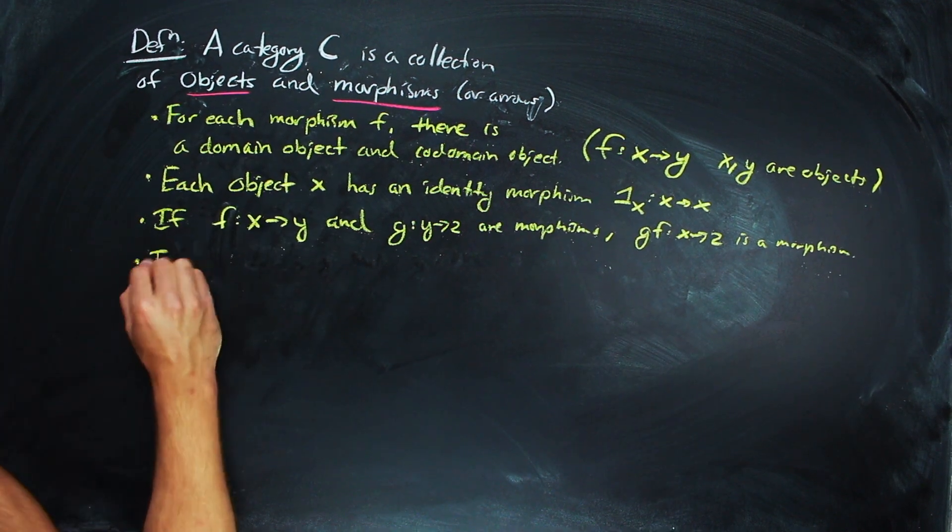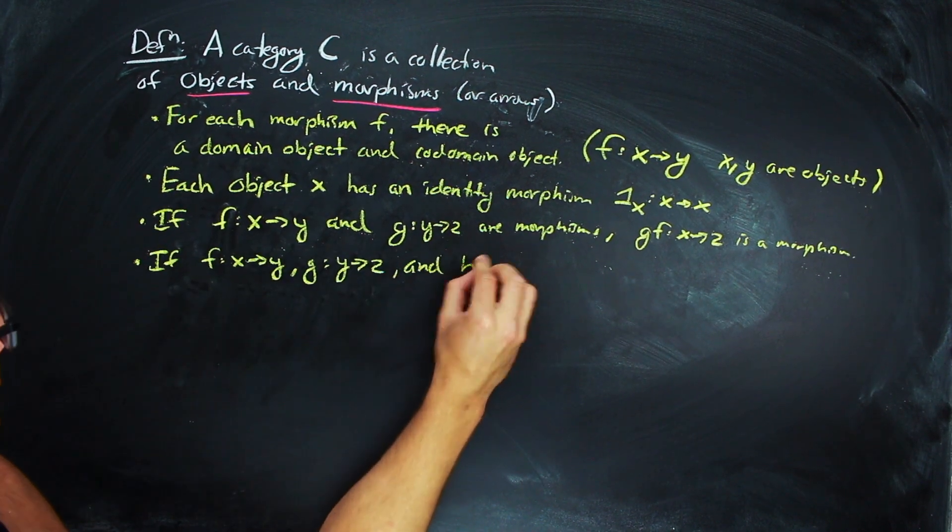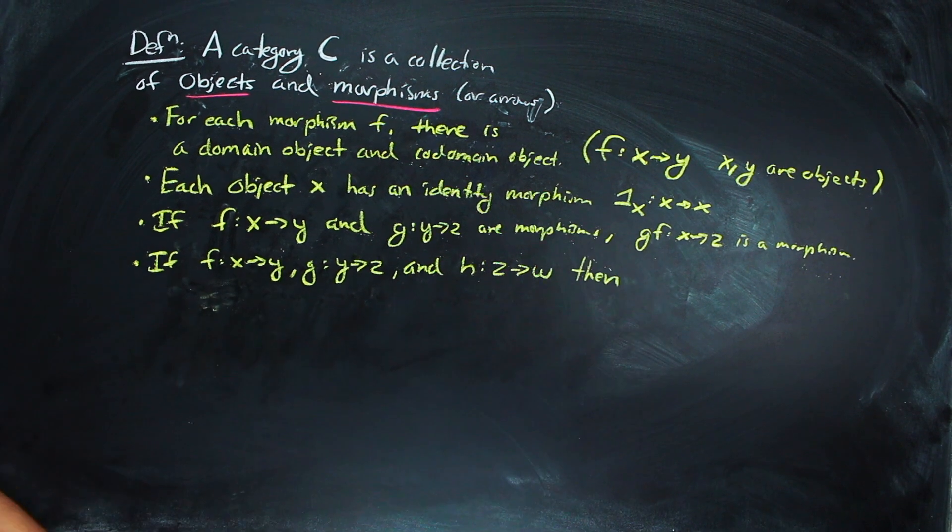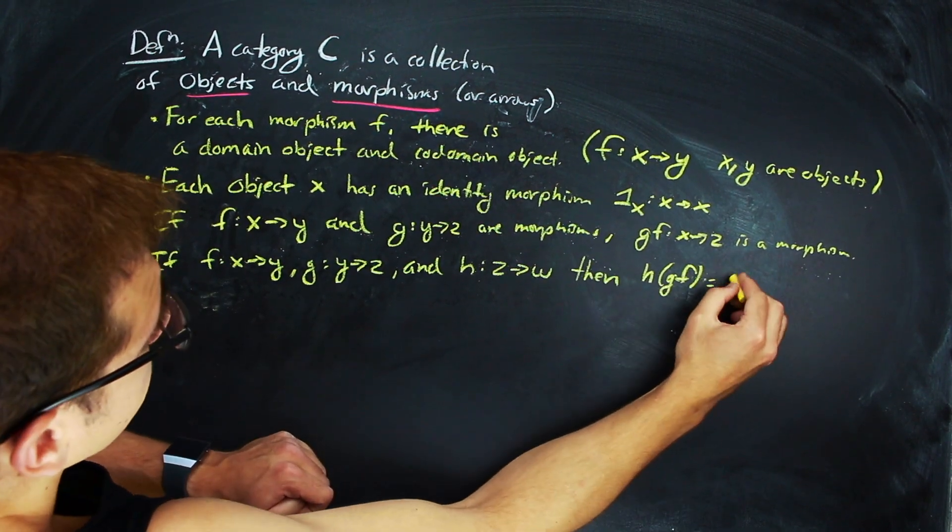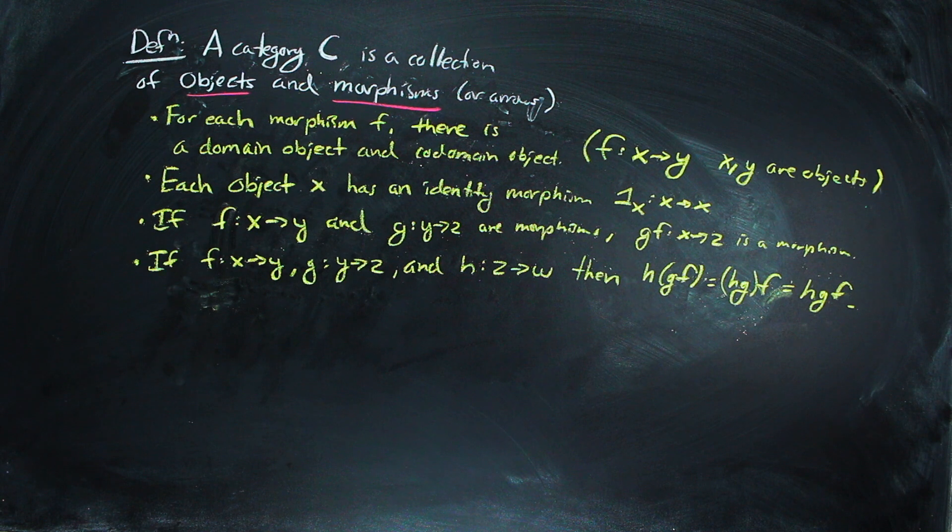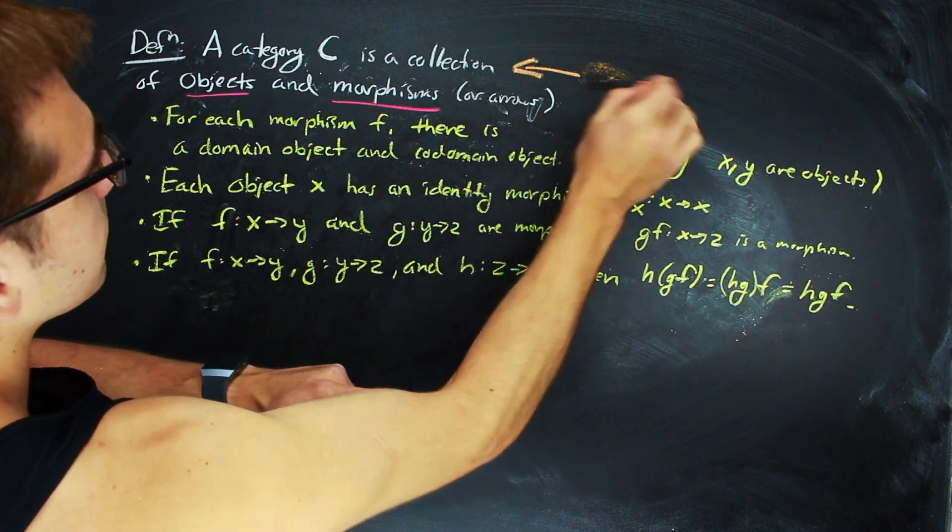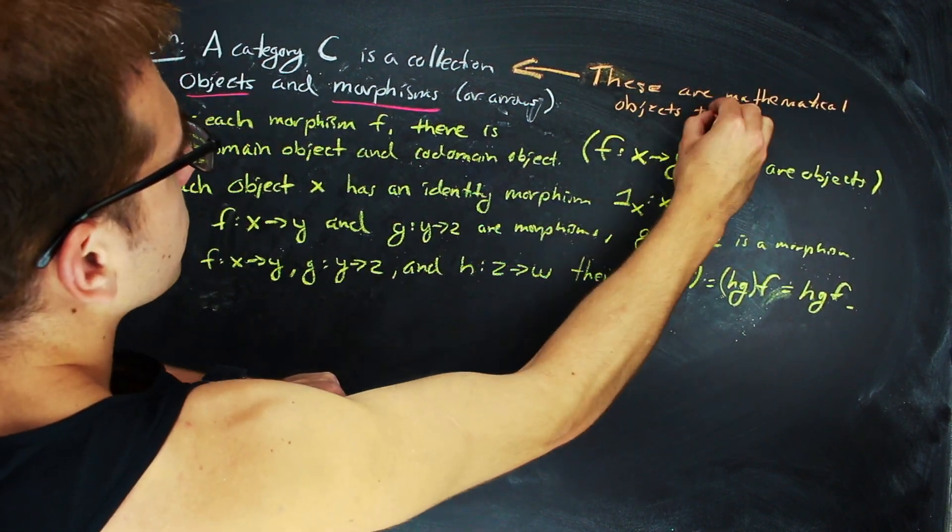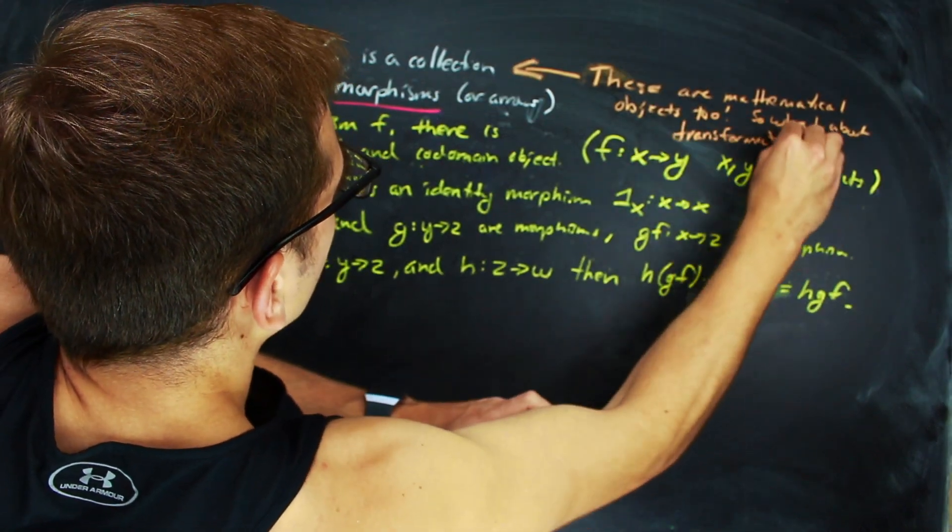And if we have a third morphism, h from z to w, the composition h with the composition g of f and the composition of h of g composed with f are equal. Like many, if not all, mathematical objects, we can learn more about a category by looking at a transformation from it to another category.